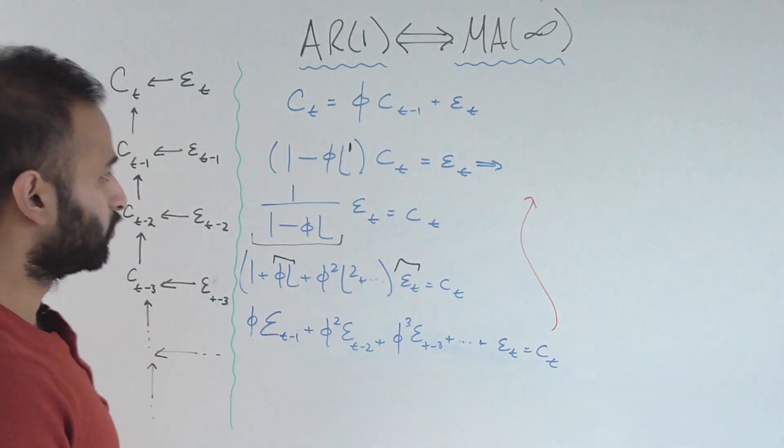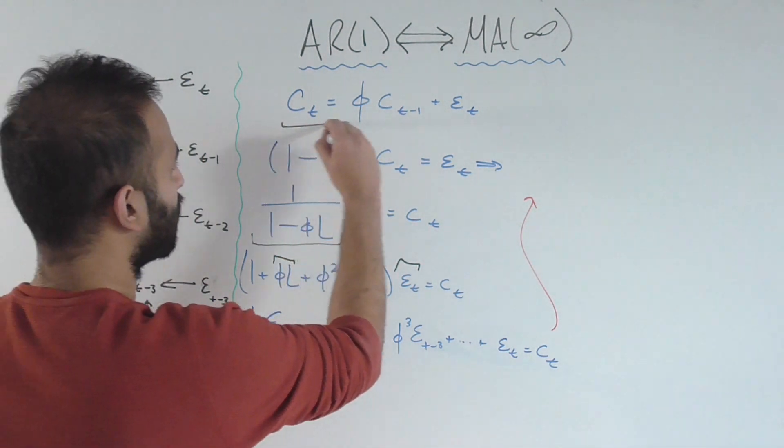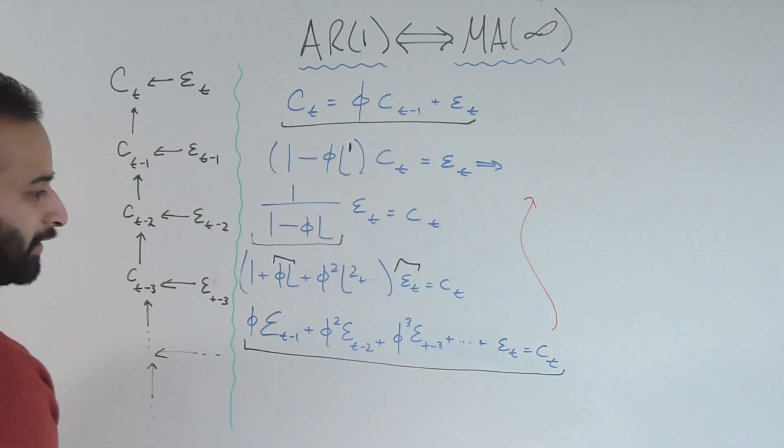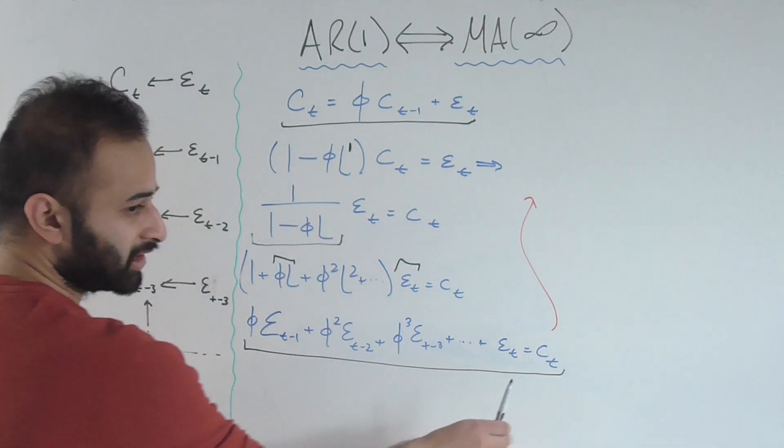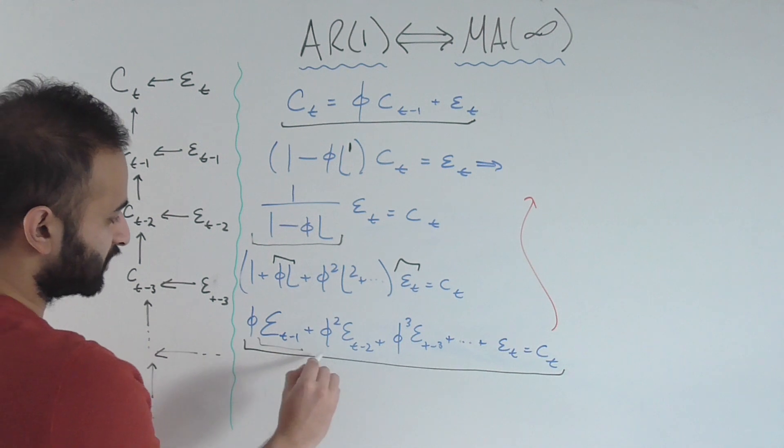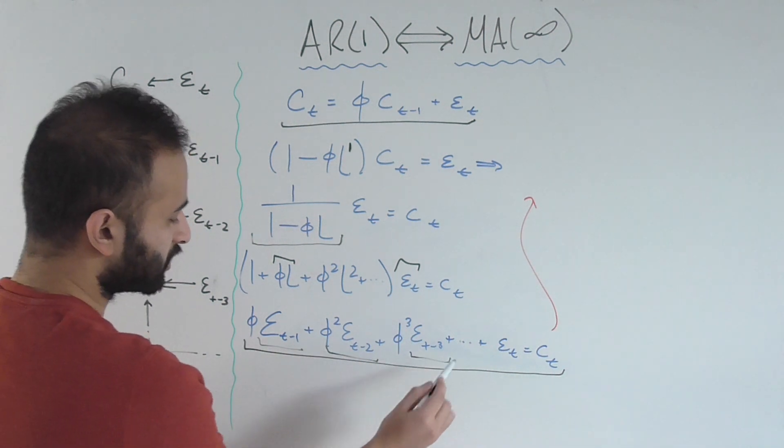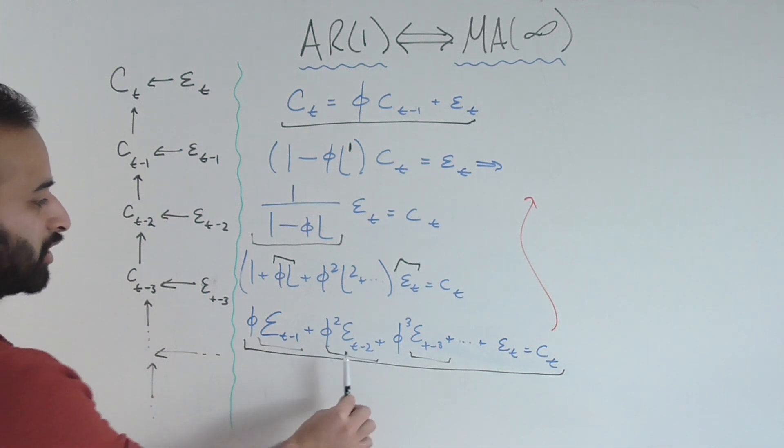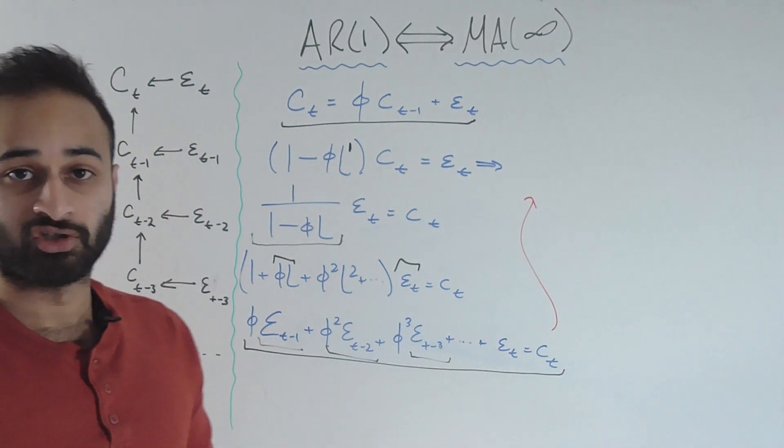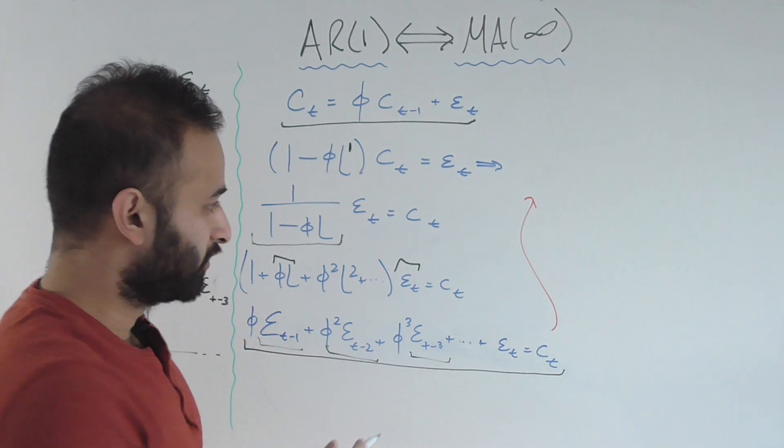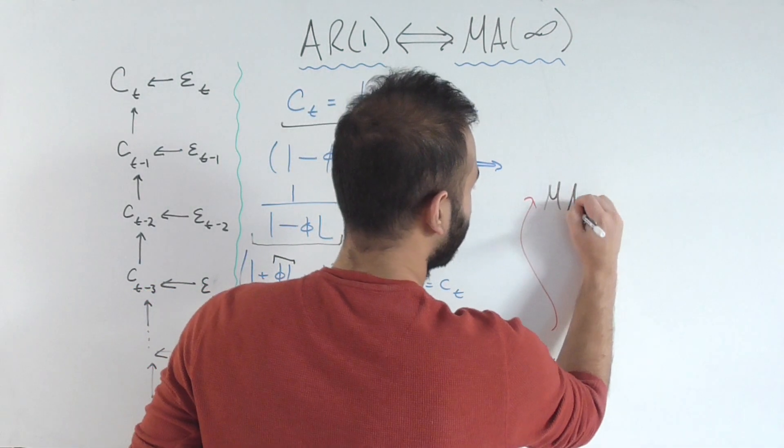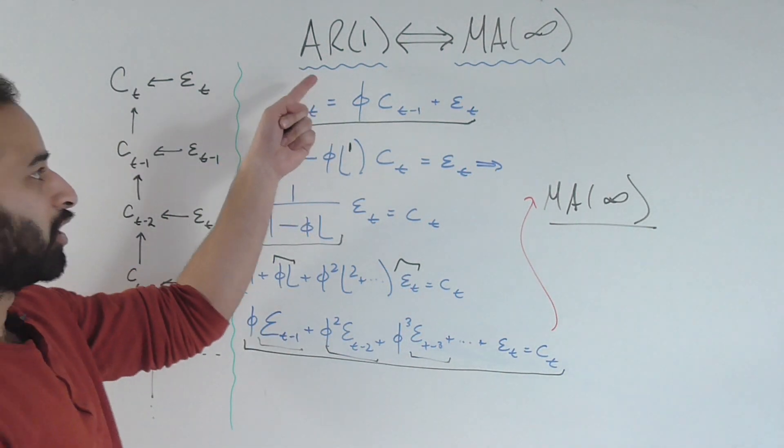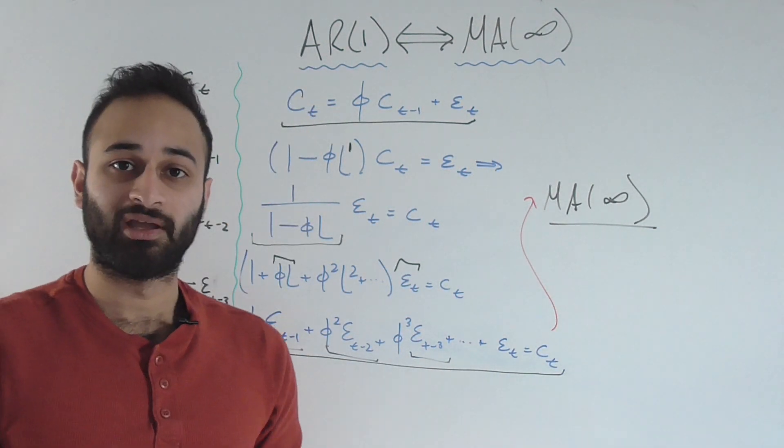Now if we look at this, what did we just do? We took an AR1 process and recast it as an MA infinity process. This is saying that the time series is a function of random innovations or errors infinite periods in the past - from period t-1, period t-2, period t-3, all the way to infinity. That's why this is an MA infinity process. We just showed that an AR1 process is equivalent to an MA infinity process.